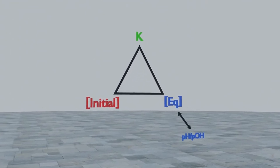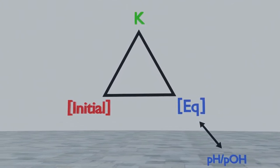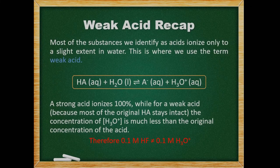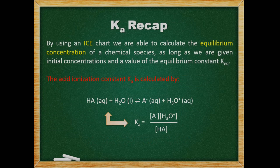Before we begin to go through the calculations, looking at this triangle might be helpful. The three apexes are labeled K, initial concentration, and equilibrium concentration. We can also go from the equilibrium concentration to the pH or pOH. Two of these three values are always given and we then have to find the third. The acid ionization constant Ka is calculated by the concentration of the conjugate base multiplied by the concentration of the hydronium ion, over the concentration of our weak acid.